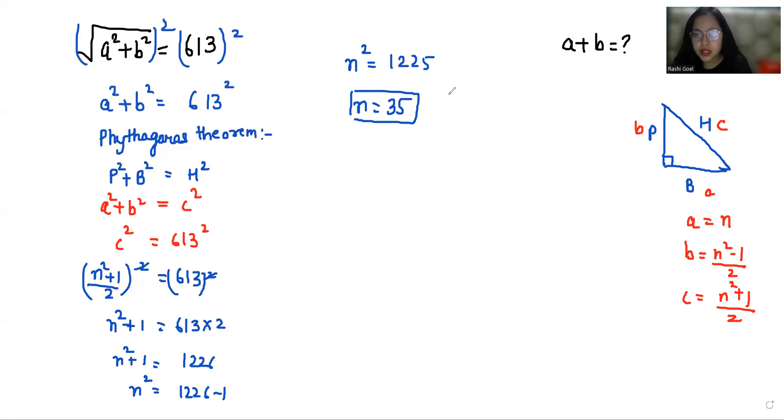Now we have to find a + b. a = n, so a = 35. b = (n² - 1)/2, that is (35² - 1)/2. 35² is 1225, so (1225 - 1)/2 = 1224/2 = 612.